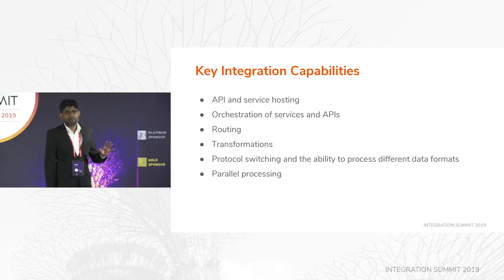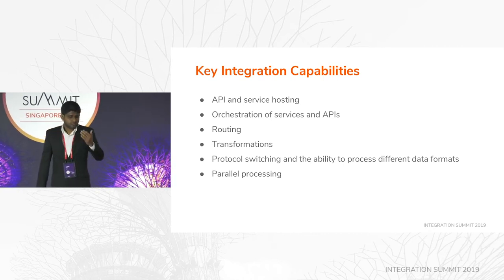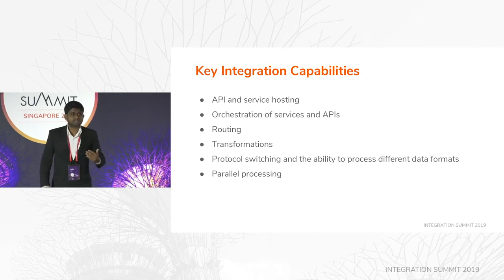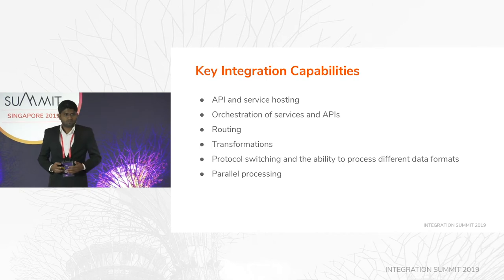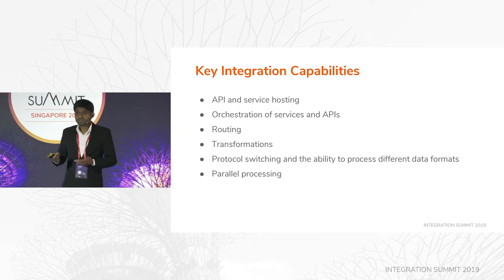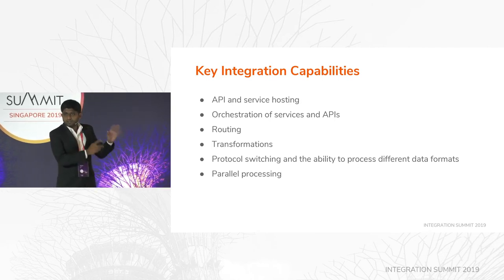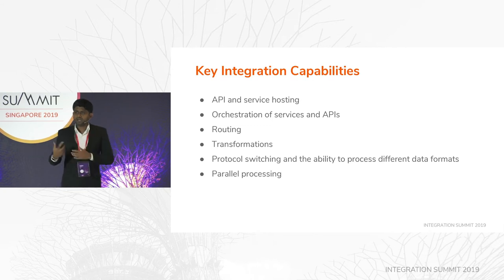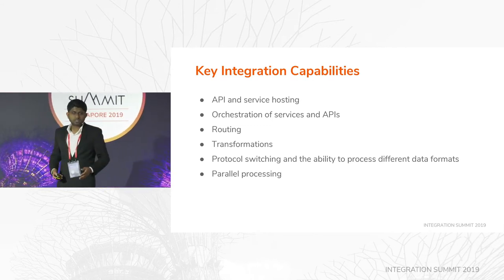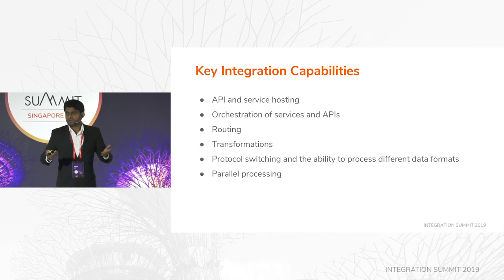Consider key integration capabilities. Do we need APIs and service hosting? It doesn't mean you have to have all these things, but you have to identify what your system needs. Do we need orchestration or services? Do we need content-based routing? Do we need message transformations? Do we need protocol switching? Do we need parallel processing — where you invoke two backends in parallel, get the response, do some logic, and respond back? When you choose your integration vendor, think about these capabilities. You don't have to go with the latest or greatest software; understand your own capabilities first.